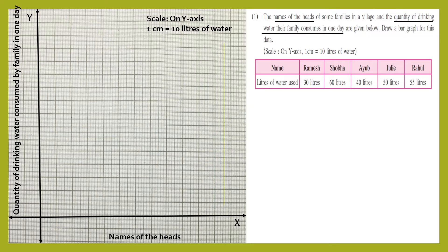The scale is already given in the question: on Y-axis, one centimeter equals 10 liters of water. Now let's write the names on the X-axis. We'll be leaving one centimeter after the Y-axis, and this one centimeter will be used for Ramesh. Then next one centimeter for Shobha, then Ayub, then Julie leaving one centimeter, and finally Rahul.